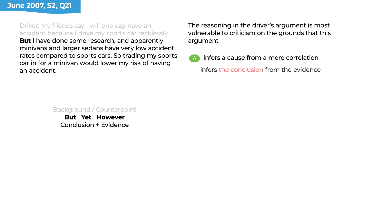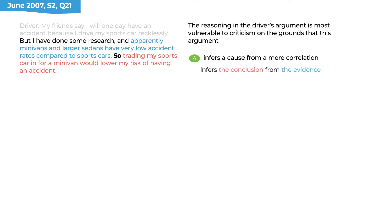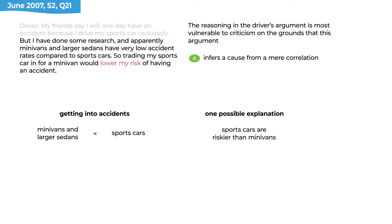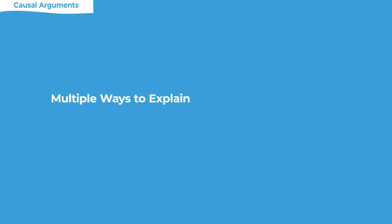The correct answer says the author inferred a cause from a mere correlation. Whenever an answer choice on a flaw question says 'the author inferred this from that,' the thing inferred is the conclusion. The word 'but' tells us we're leaving background and beginning the author's argument. The 'so' tells us the conclusion comes second. The conclusion is that trading in a sports car for a minivan would lower risk — active verbs signifying causal influence. The evidence is the curious comparison: sports car drivers get into more accidents. The author blamed the car, but that doesn't have to be the explanation. There are multiple ways to explain a correlation.